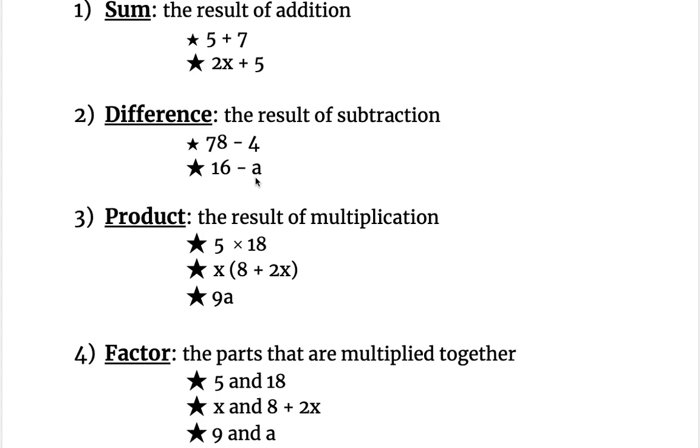Product is a special word to represent the result of multiplication. This is the product of 5 and 18 and this is actually the product of x and the sum of 8 and 2x. So the multiplication is actually between the x and the parentheses. So this is like your distributive property that we've talked about before. And 9a, as we saw in our example, this is 9 multiplied by a. So this is a product between 9 and a.